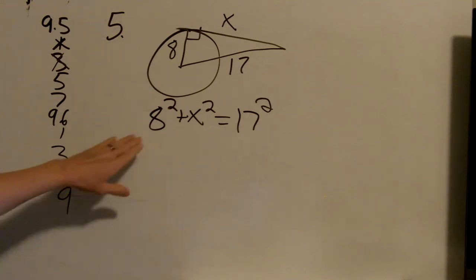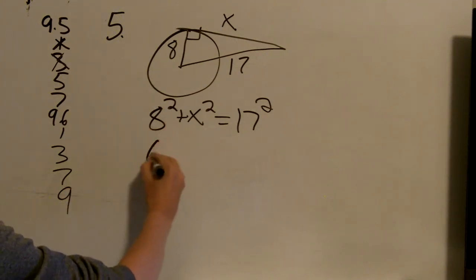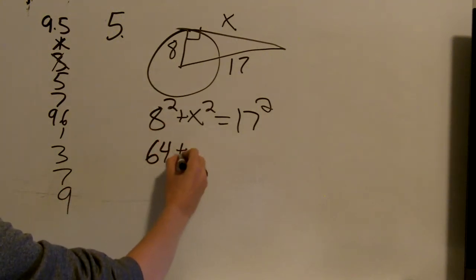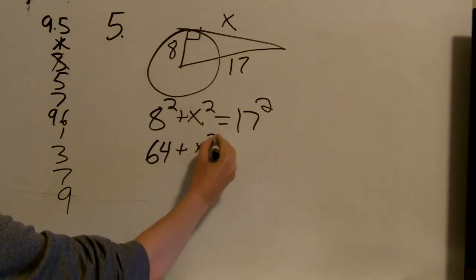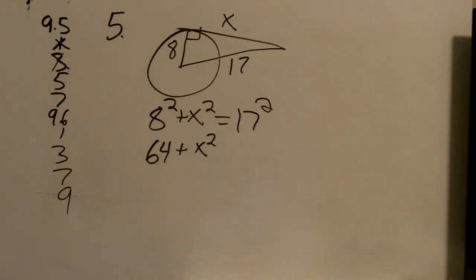Now, I think the easiest thing to first do is get rid of as many of the squares as you can. 8 squared, or 8 times 8 is 64. Plus, can't change x squared, so it just stays as x squared. I believe 17 squared is 289.